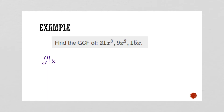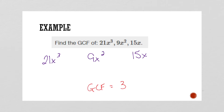Let's find the GCF of 21x³, 9x², and 15x. What's the biggest number that goes into all three? Starting with my smaller number — can I pull a 9 out of 15 evenly? No. Same with 21. So what's the next biggest factor of 9? It's 3. Can I pull a 3 out of all three? Yes. Check your x's: I've got three here, two here, and one here. I can only pull the smallest one out, so my GCF is 3x.